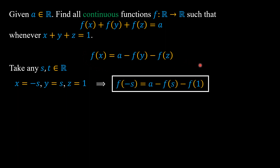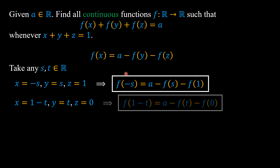This allows us to represent f(-s) in terms of f(s). Second, we substitute x = 1 - t, y = t, and z = 0 into this functional equation, so we can represent f(1 - t) in terms of f(t).